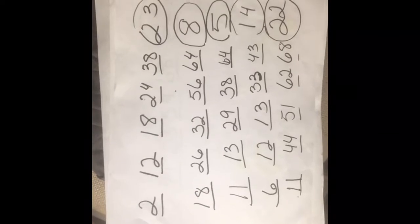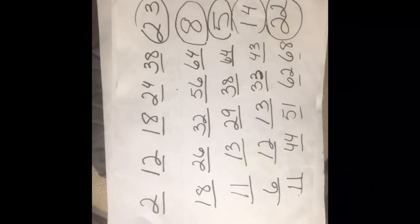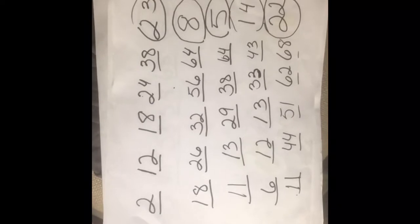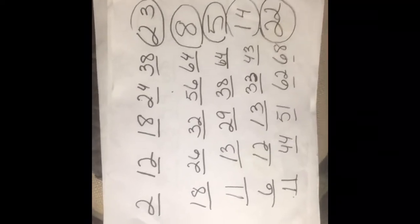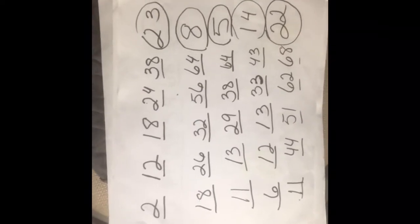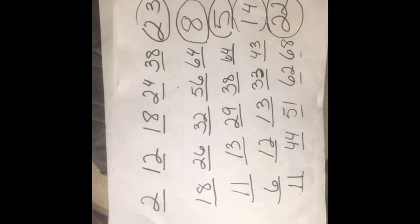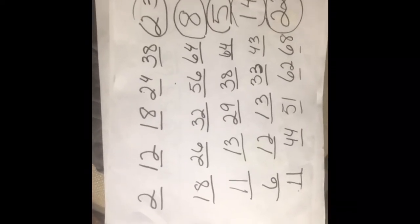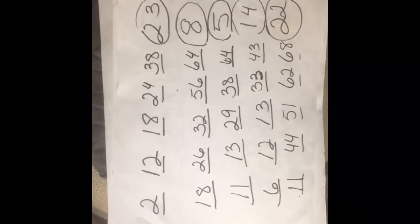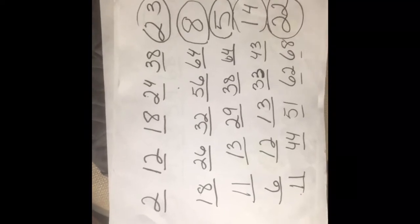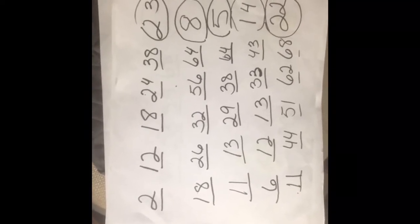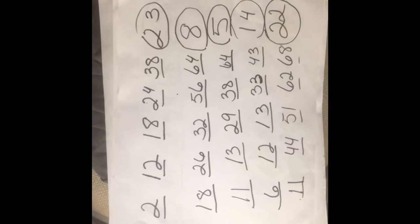11, 13, 29, 38, 64, and the Mega Ball 5. 6, 12, 13, 33, 43, Mega Ball 14. 11, 44, 51, 62, 68, and the Mega Ball 22.